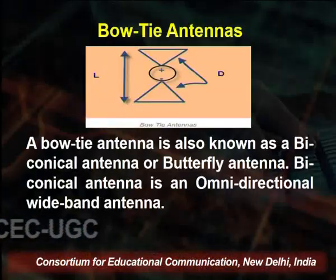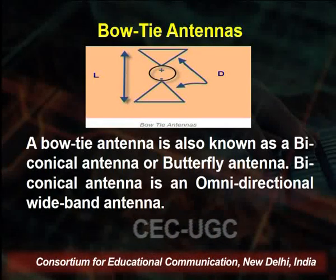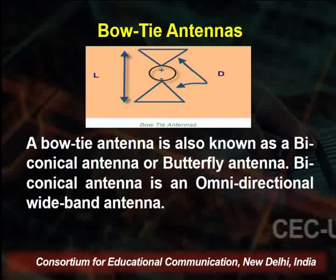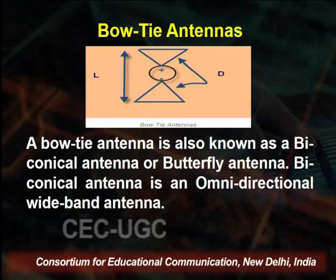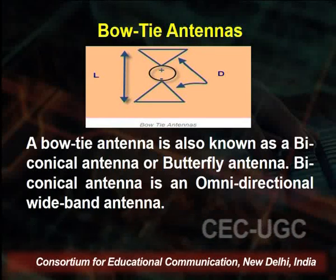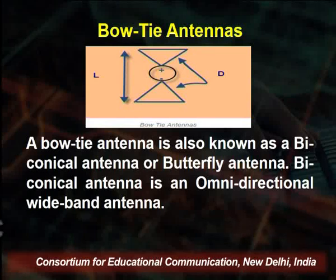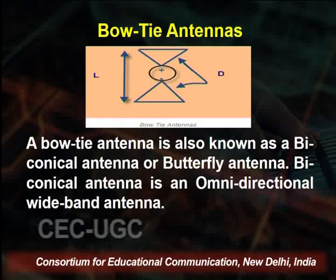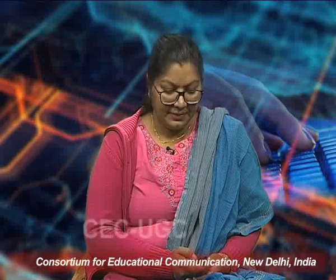Next is the bow tie antenna. The biconical antenna is just like a butterfly antenna and is an omnidirectional wideband antenna having two parts. According to the size of this antenna it has low frequency responses and acts as a high pass filter. Beyond the design frequency, the radiation pattern of this antenna gets distorted and spread — this depends upon the size.